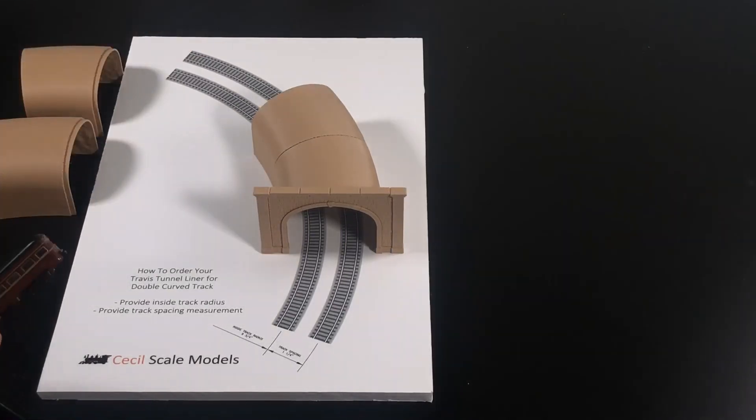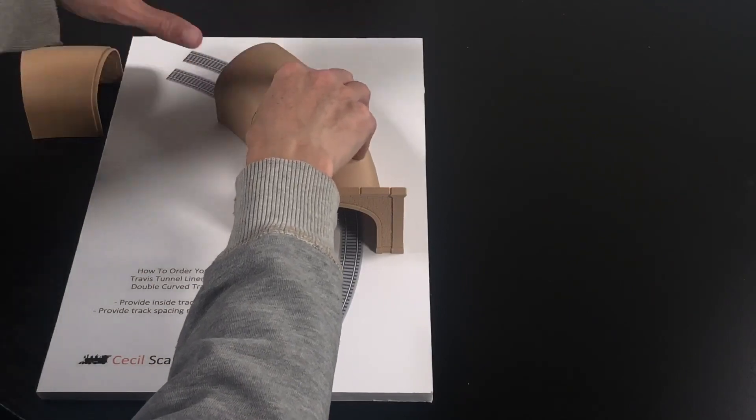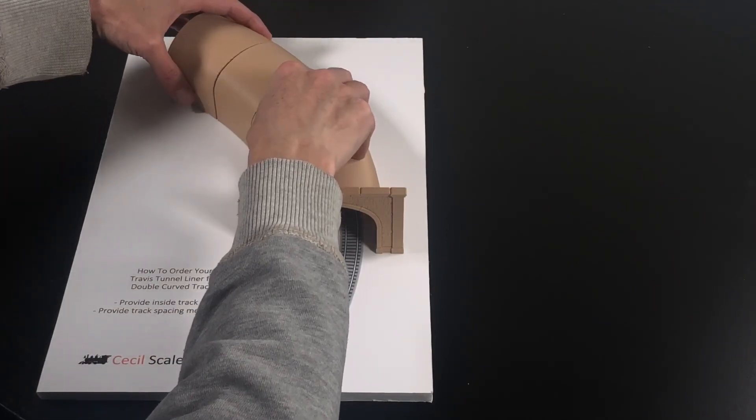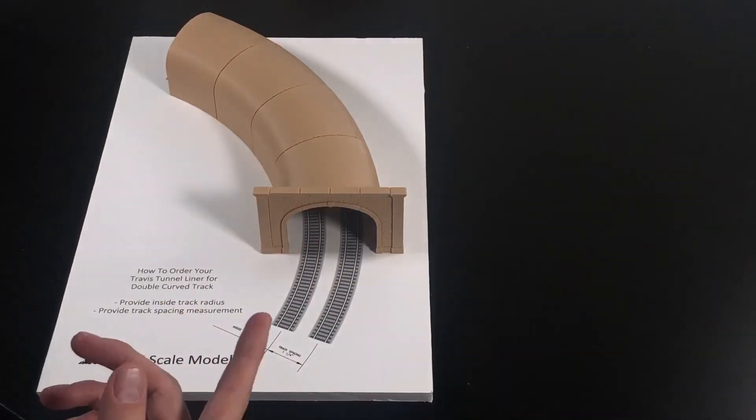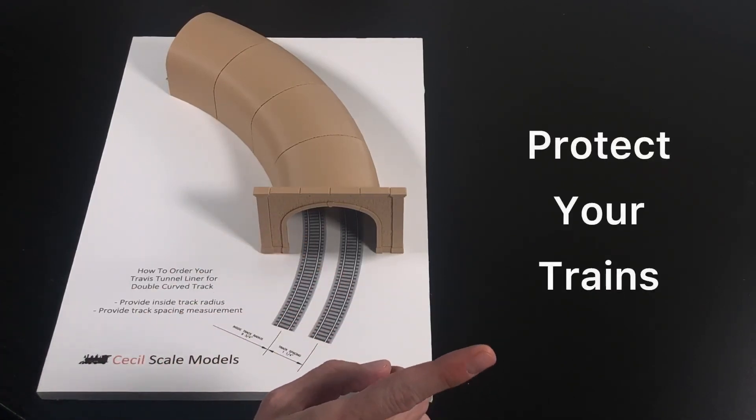Pull it out car by car, set it aside, put it back on the track somewhere else, and then reassemble your tunnel liner underneath the layout and you're good to go. So you're still going to have derailments, you're still going to have collisions, but your equipment is not going to hit the floor. So reason number three that you want to line your model railroad tunnel is protecting your trains.